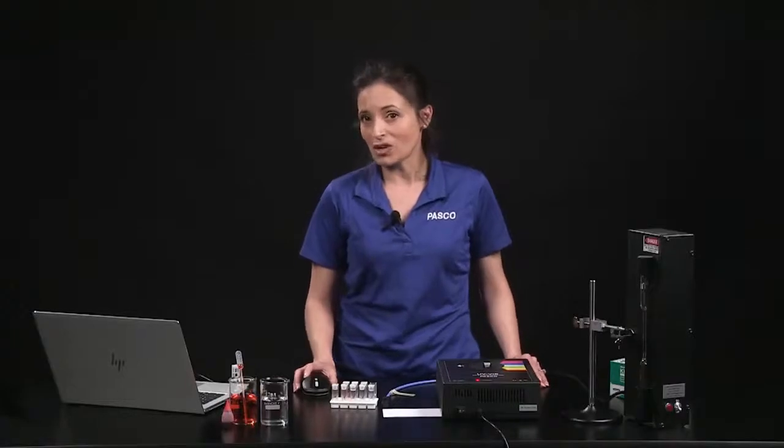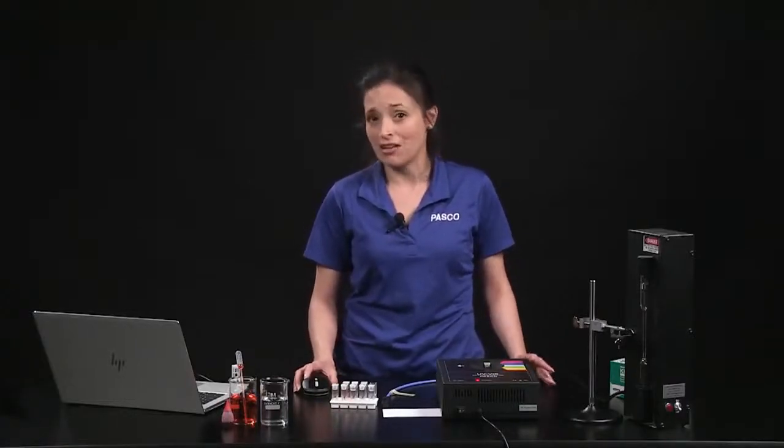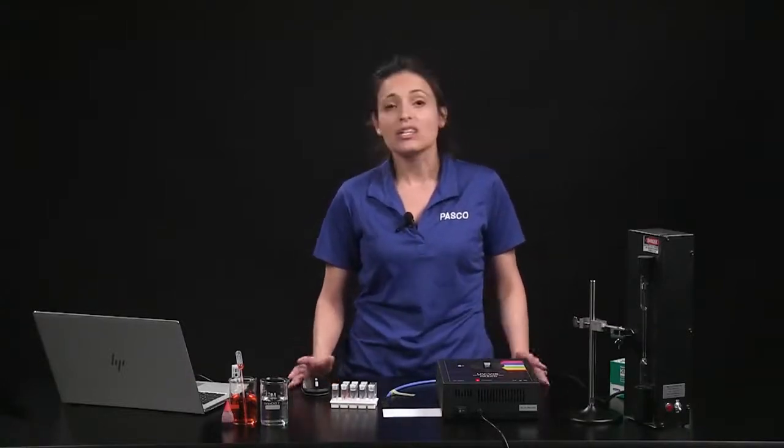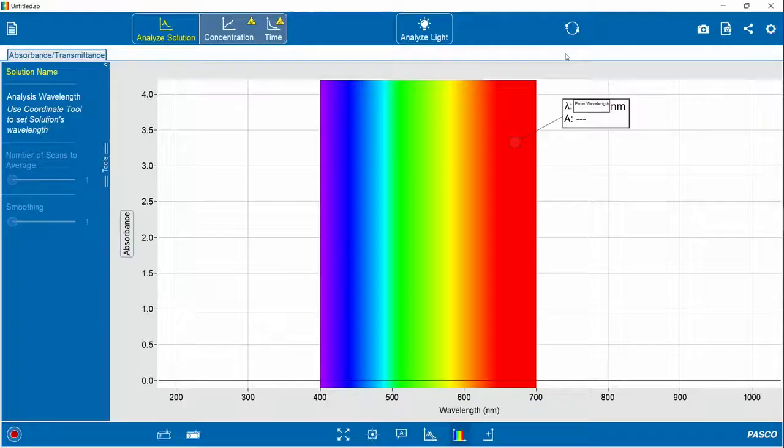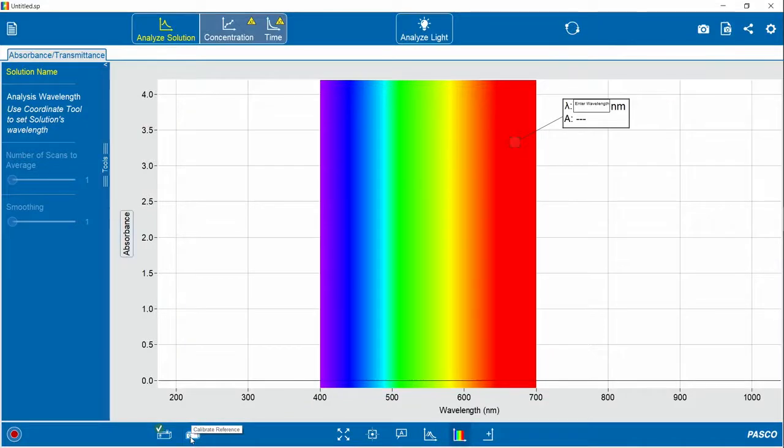To investigate solutions, start by calibrating the spectrometer with your blank, or the substance that you use as a solvent. I used distilled water for the solutions I'm using today, so that's what's in this cuvette. In the software, click Calibrate Dark, and then Calibrate Light. And now you're ready to analyze solutions.